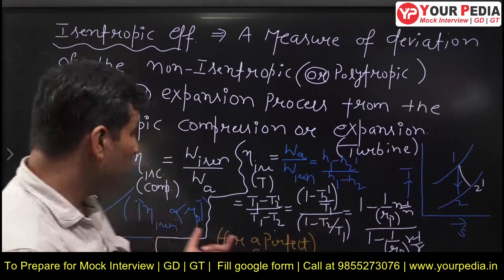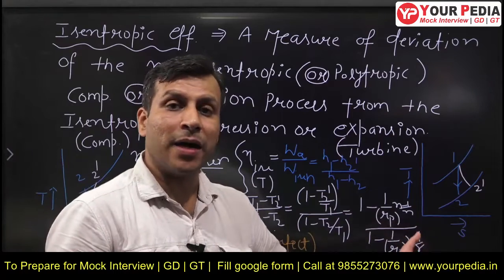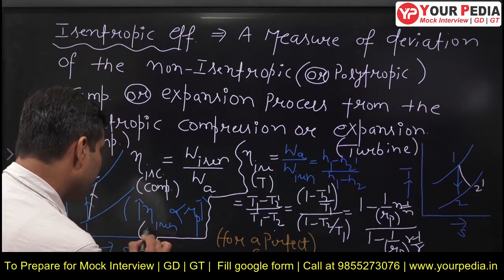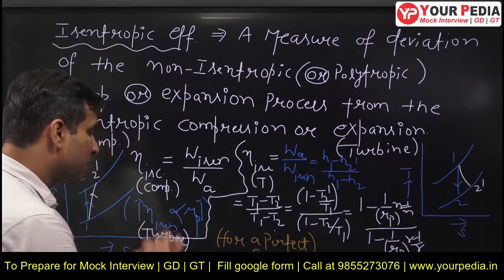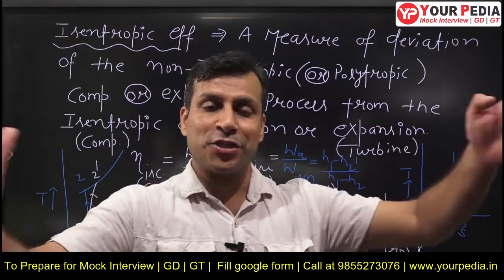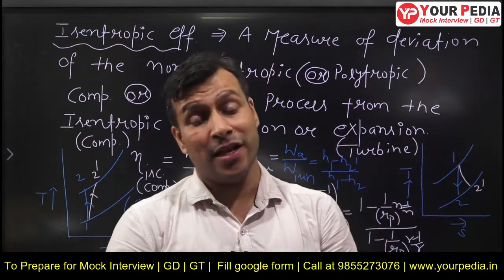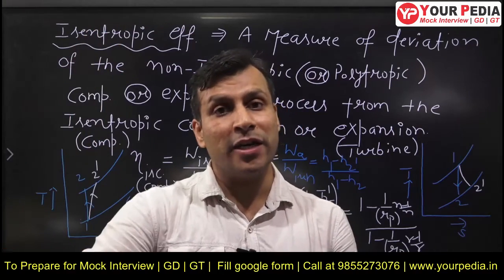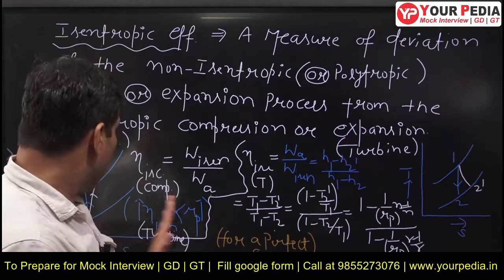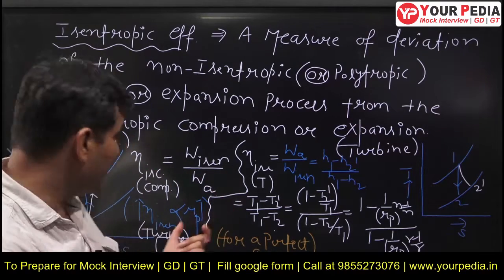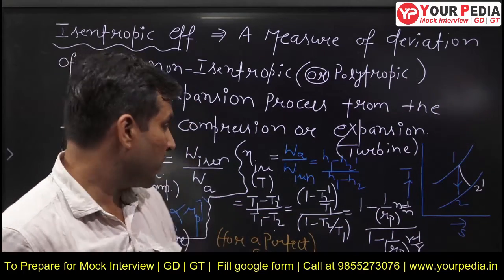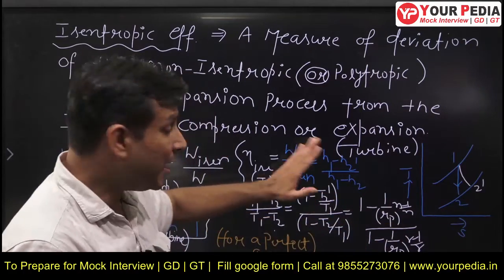More is the pressure ratio, more is the isentropic efficiency - this is for a turbine. For a compressor, it is the reverse: if pressure ratio increases, efficiency decreases. For a turbine, pressure ratio increases, efficiency increases. But for both cases, efficiency is a function of pressure ratio. For the turbine, they are directly proportional; for the compressor, they are inversely proportional. So we have proved that isentropic efficiency is a function of pressure ratio.